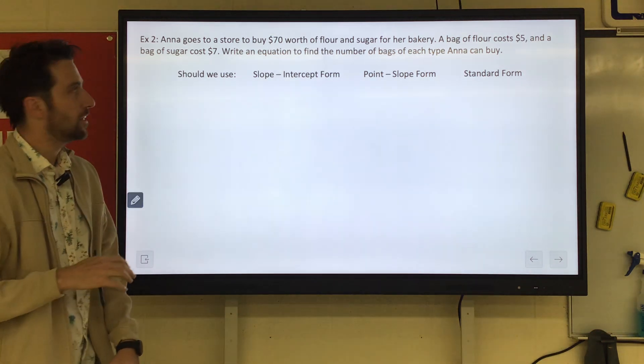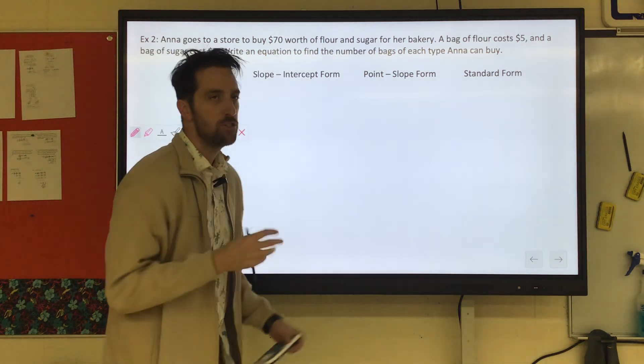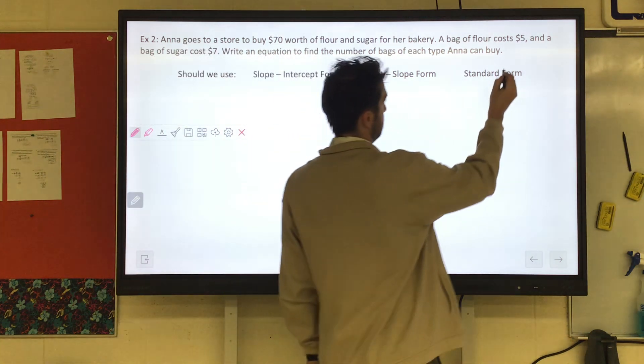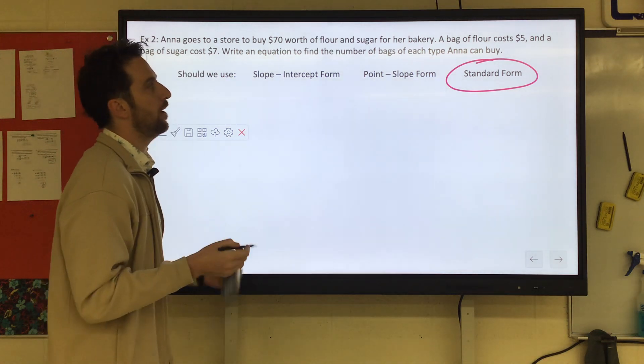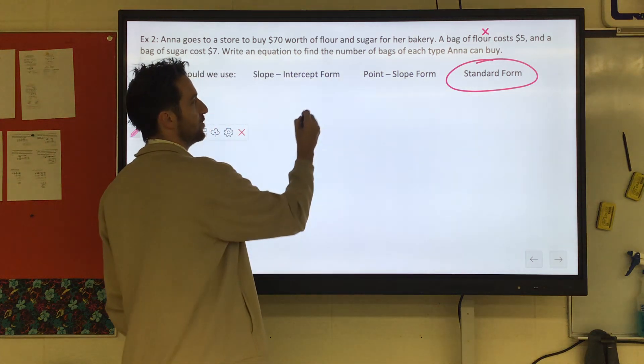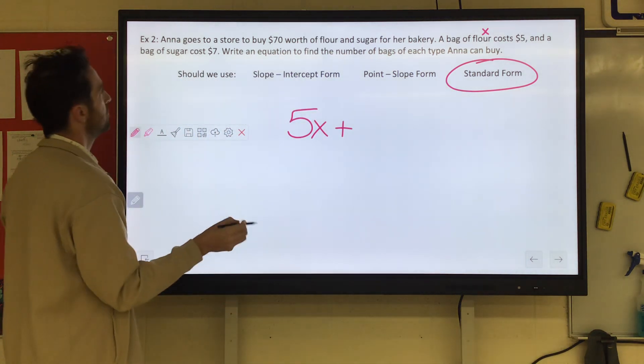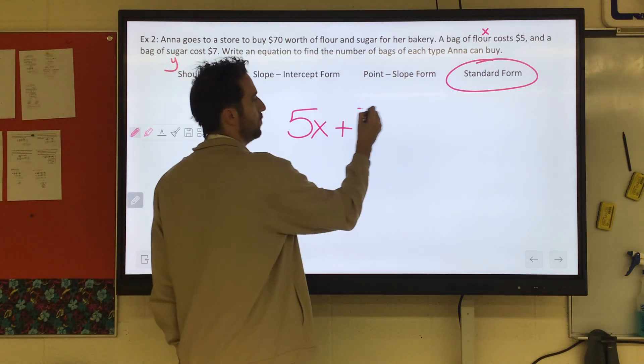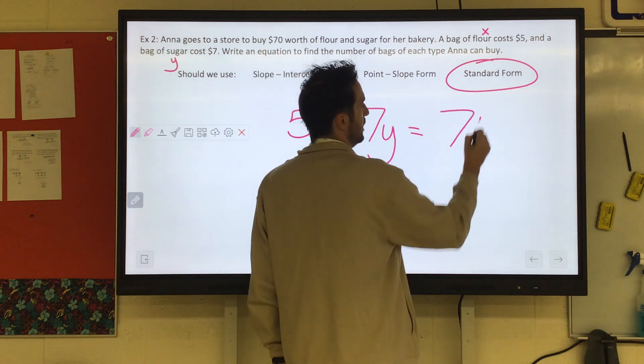Now they gave us two rates. They gave us the rate per bag of flour. They gave us the rate per bag of sugar. That lends itself very well to standard form. So then writing the equation for that, let's call flour x, and it's $5 per bag. So that would be 5x plus our sugar is $7. We're going to call sugar y, so that would be plus 7y equals the amount of money we have to spend would be $70.